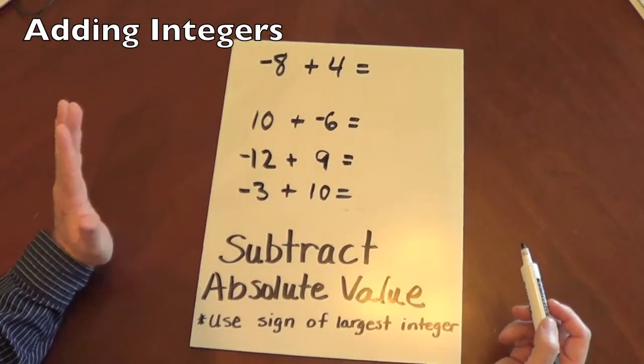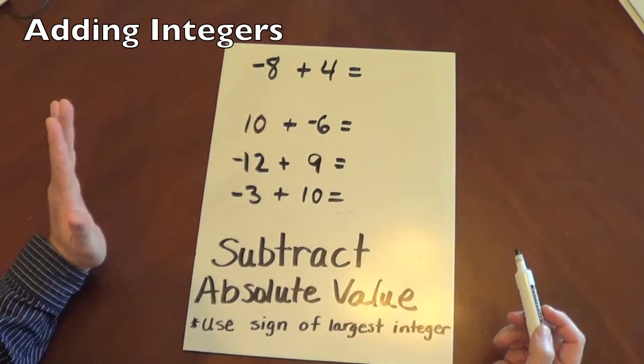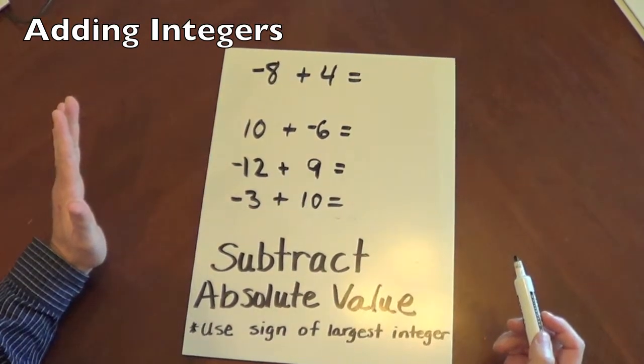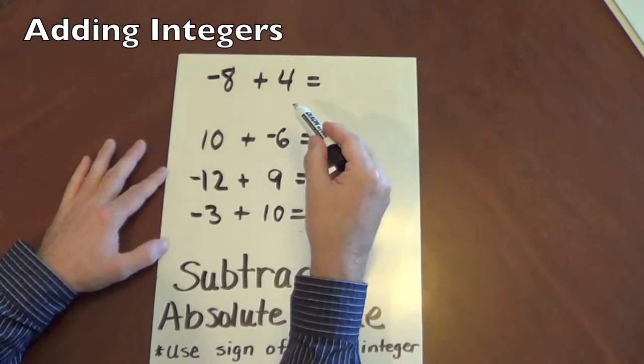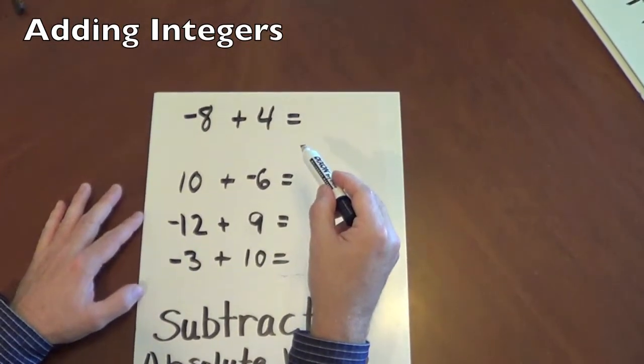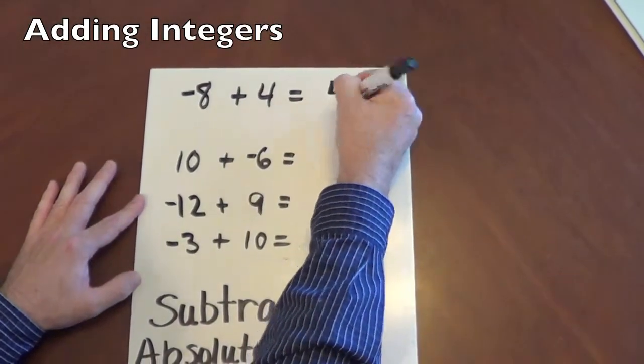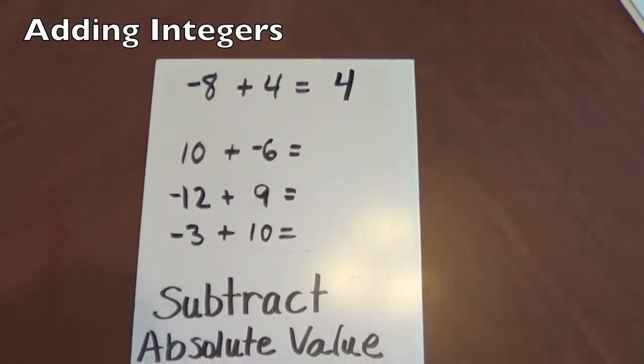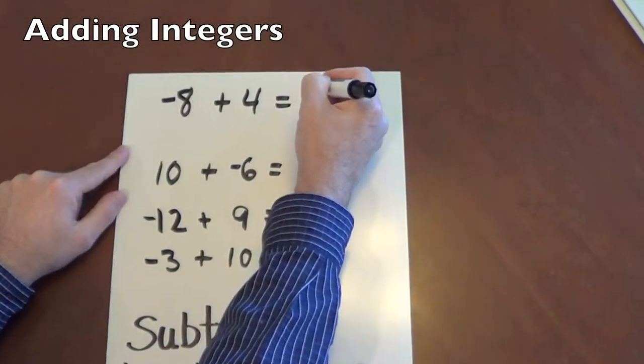Now, okay, when we add two integers with different signs, we're going to subtract the absolute value and we're going to use the sign of the largest integer. Okay, negative 8 plus 4. So we subtract the absolute value, 8 minus 4 and we get 4. And then we use the sign of the largest integer. Negative. So our answer is negative 4.